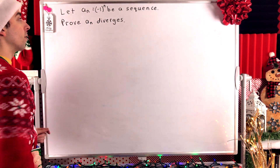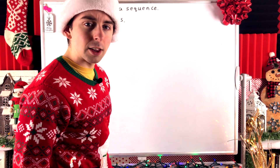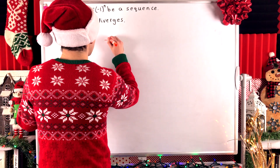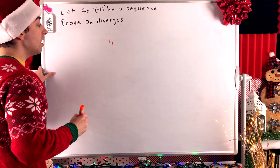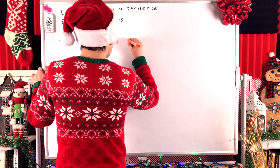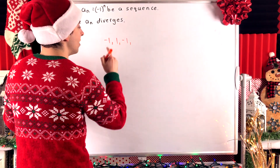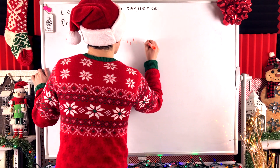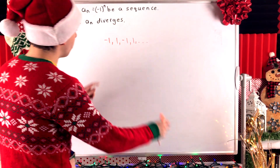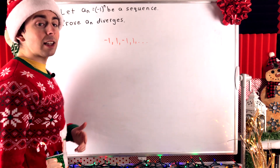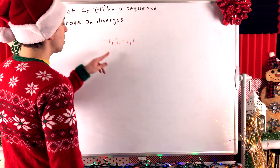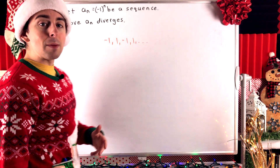What are the terms of this sequence, negative one to the power of n? Negative one to the power of one, the first term, is negative one. Negative one to the power of two is positive one. Negative one to the power of three is negative one, and so on. For odd values of n, negative one to the n is negative one. For even values of n, it is positive one.